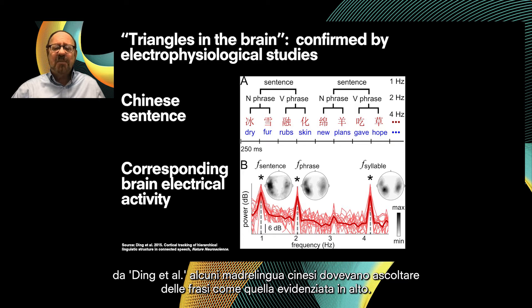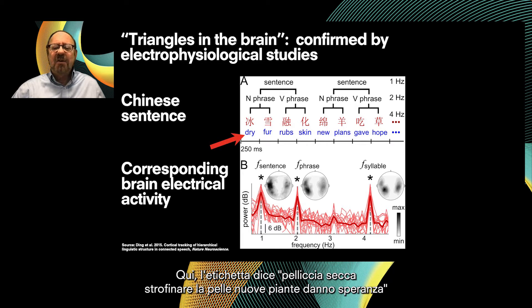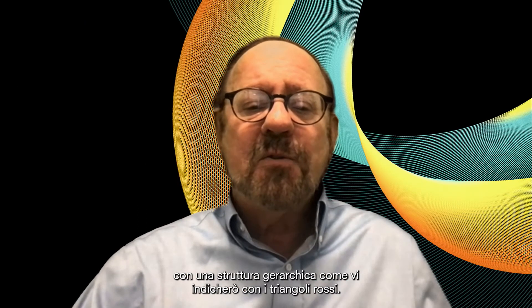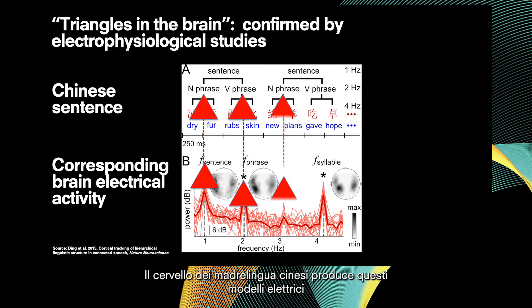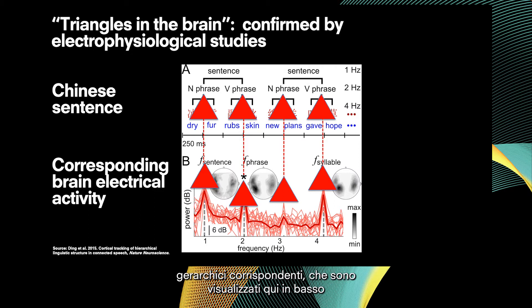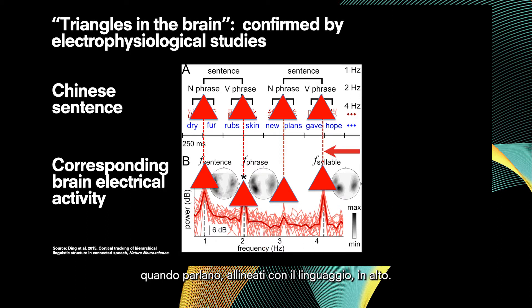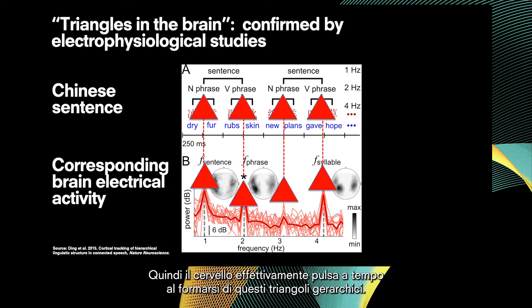In an experiment done in 2015, Ding et al. had Chinese human subjects listen to sentences like 'dry fur rub skin, new plans give hope,' with a hierarchical structure indicated by red triangles. The Chinese subjects' brains produced corresponding hierarchical electrical patterns — peaks that align with the language shown at the top. Thus the brain actually pulsates in time to the formation of these hierarchical triangles.